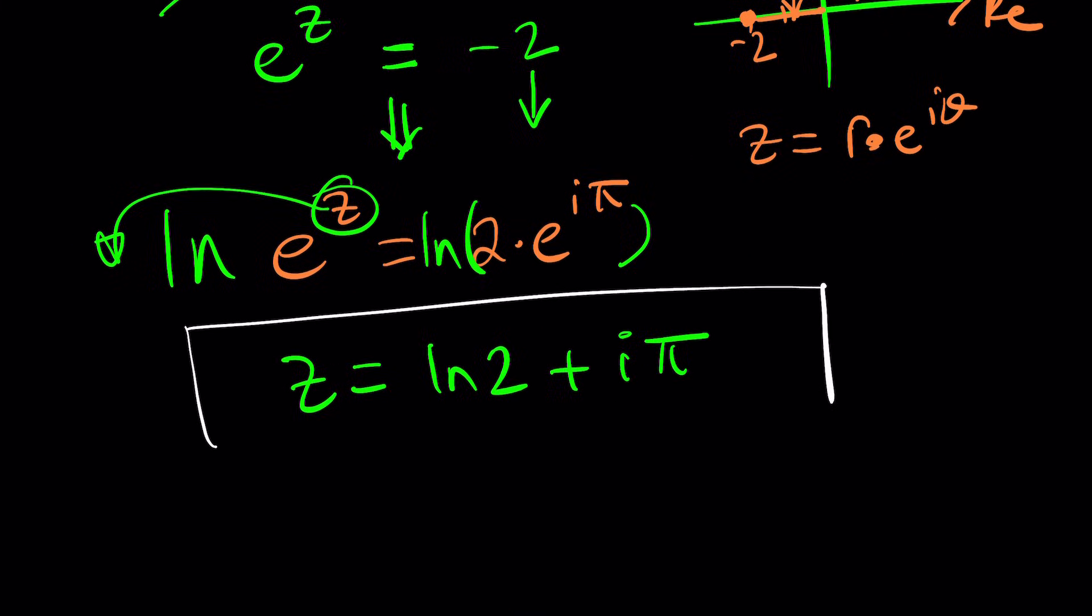Well, what about considering all the possible angles? Yes, you can replace pi with pi plus 2 pi n, where n is an integer, so that you can cover all the solutions in this case. And this brings us to the end of this video.